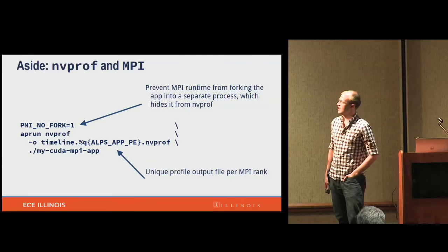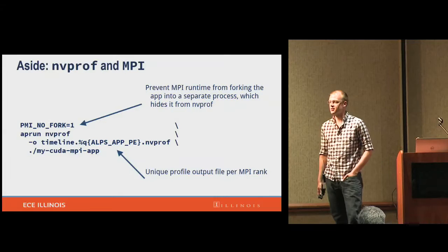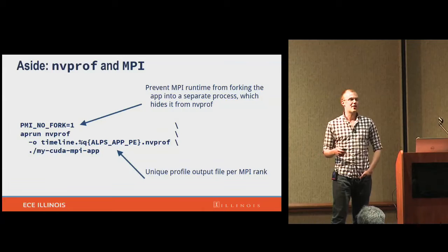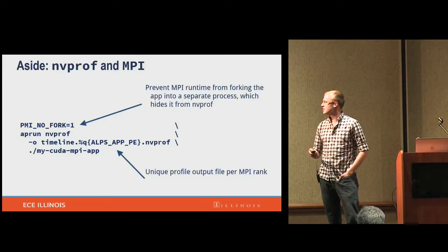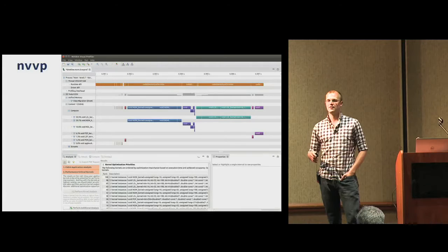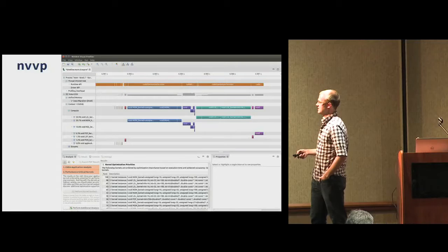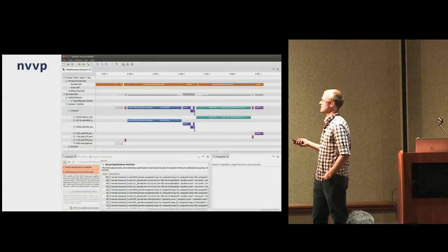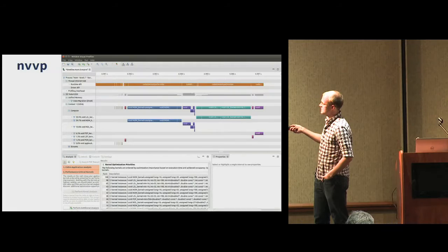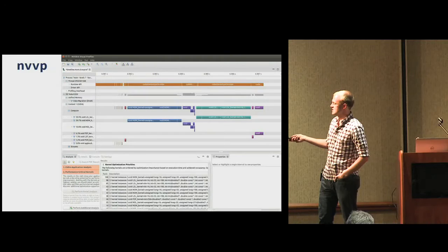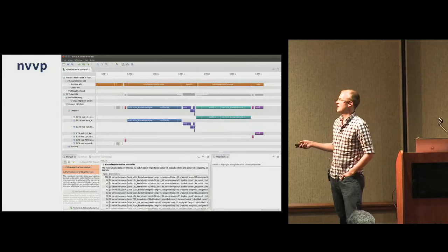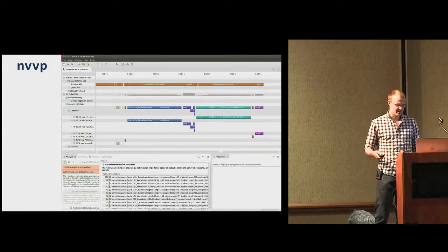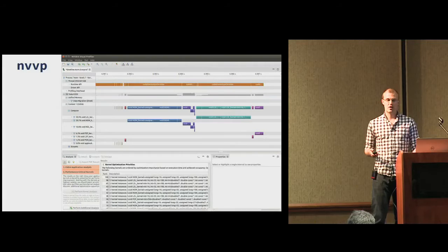The AlpsAppPE setting is not in the Blue Waters documentation — it's something to keep in mind, but you can use NVProf with MPI. This is the main visual profiler window: after running NVProf, you open it and import those two files to get a dense set of information. There's a timeline showing runtime calls, GPU utilization, and kernels — some of which are overlapping in execution. The profiler also highlights which kernels it thinks you should target when optimizing. You can click deeper into this; there's a huge amount of information available.